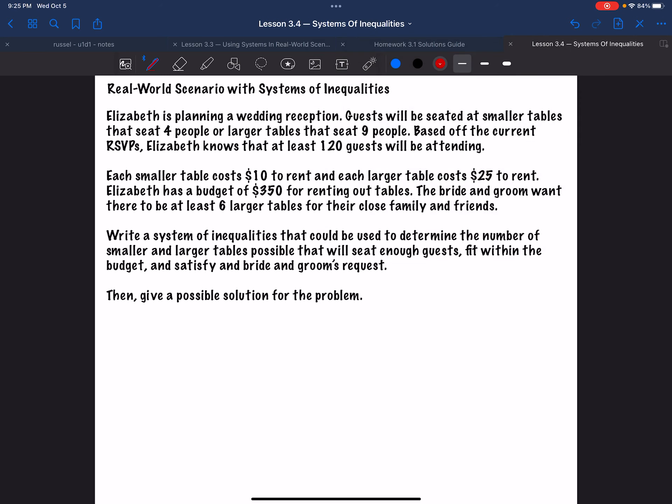So let's go over this. And hopefully there's no mistakes. Elizabeth is planning a wedding reception. Guests will be seated at smaller tables that seat four people or larger tables that seat nine people. Based off the current RSVPs, Elizabeth knows that at least 120 guests will be attending. So maybe more, right? If more RSVPs come in before the deadline, maybe that will go up. But right now we know there's at least 120 guests. We could at least get started planning.